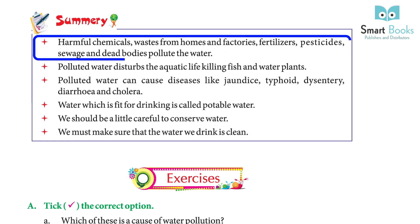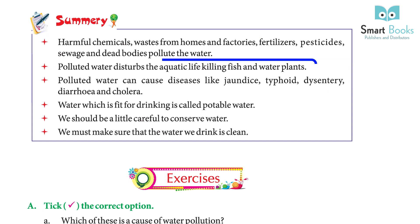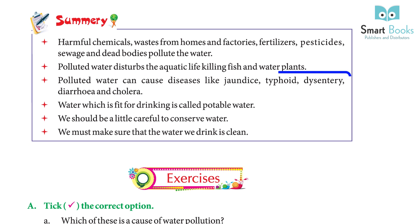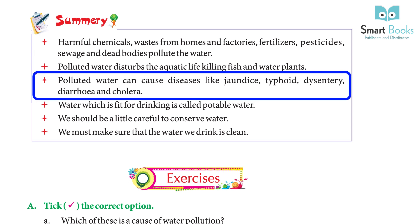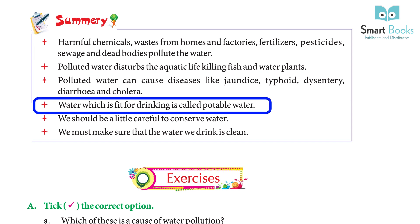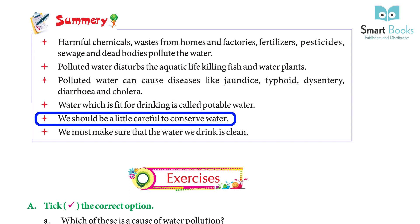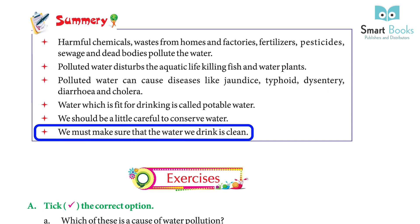Summary: Harmful chemicals and waste from homes, factories, fertilizers, pesticides, sewage and dead bodies pollute the water. Polluted water disturbs aquatic life, killing fish and water plants. Polluted water can cause diseases like jaundice, typhoid, dysentery, diarrhea and cholera. Water which is fit for drinking is called potable water. We should be careful to conserve water and make sure that the water we drink is clean.